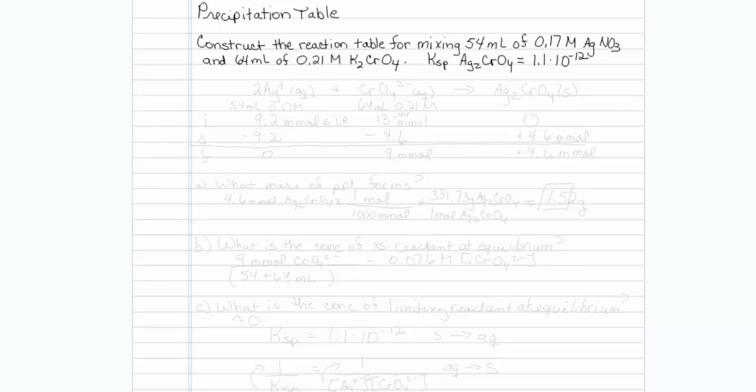This is how to construct a precipitation table. You've done many of these reaction tables before. Construct the reaction table for mixing 45 mls of 0.17 molar silver nitrate and 64 mls of 0.21 molar potassium chromate, and we're also given the Ksp of silver chromate.